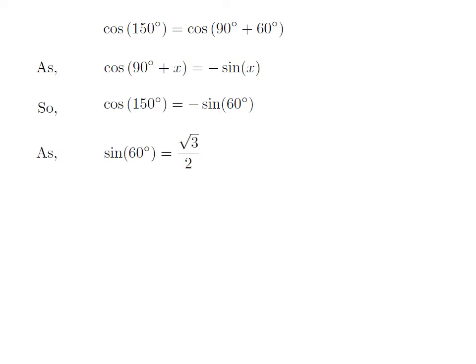We know the value of sine of 60 degrees is equal to square root of 3 upon 2. So, the value of cosine of 150 degrees is equal to minus square root of 3 upon 2.